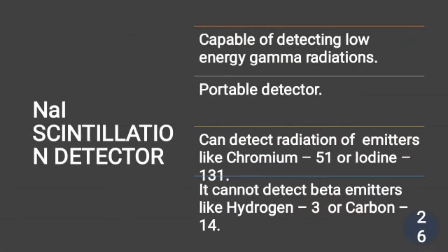Next is the sodium iodide scintillation detector. As the name suggests, the main compound used is a sodium iodide crystal. This instrument is capable of detecting low-energy gamma radiations. Like the Geiger Muller counter, it is also a portable device. It can detect radiations from emitters like chromium-51 or iodine-131. The main drawback is that it is inefficient at detecting beta emitters like hydrogen-3 or carbon-14.